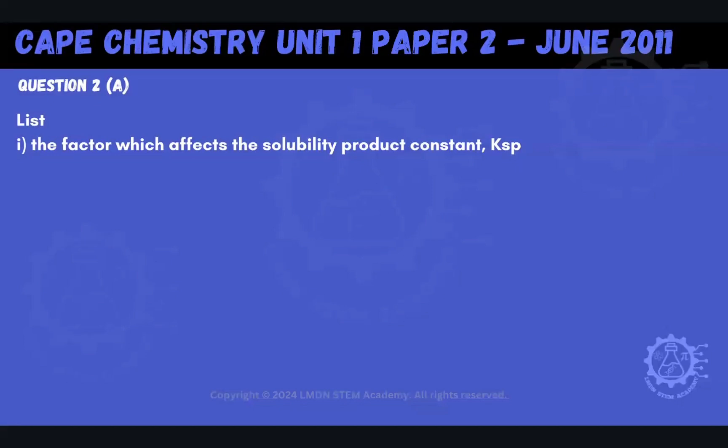The first part of the question asks us to list the factor which affects the solubility product constant, the Ksp. The Ksp is affected by temperature. We know that to be true for most of our equilibrium constants. They're affected by temperature, and that's also the case for the solubility product constant.